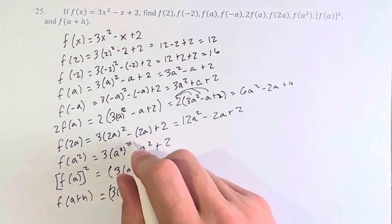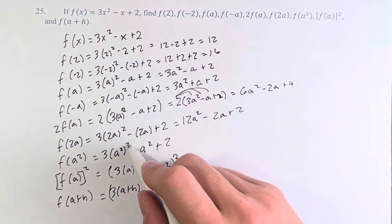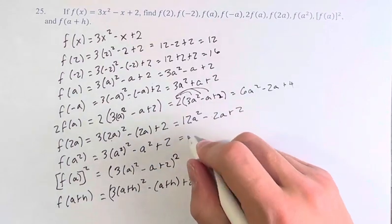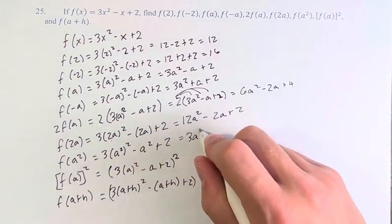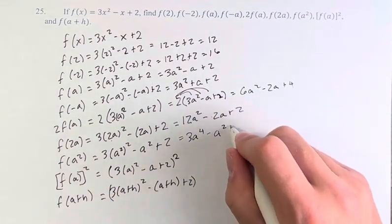f of a squared. a squared to the power of 2, you're taking one power to another, so you have to multiply them, so this is 3a to the 2 times 2, 3a to the 4, minus a squared plus 2.